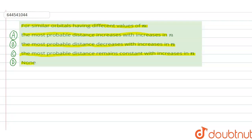So first of all, students, n is the principal quantum number. N is equal to principal quantum number, and it indicates the shells in which electrons are present.